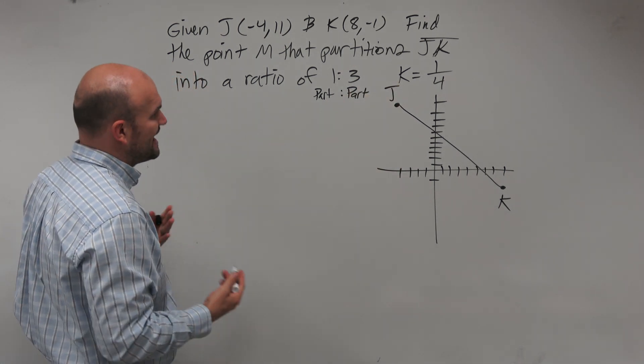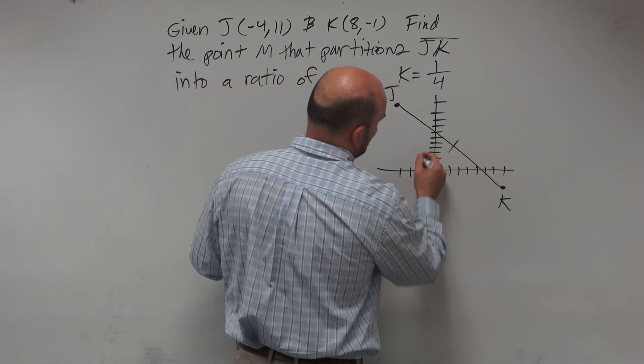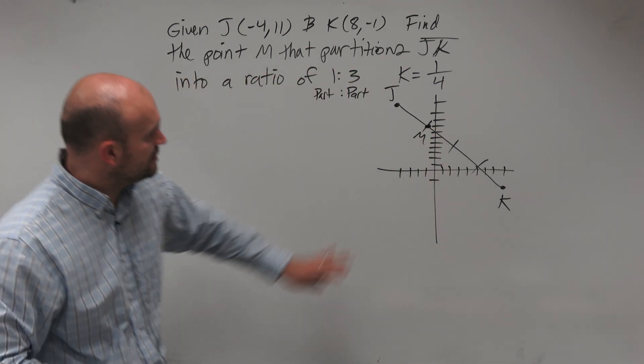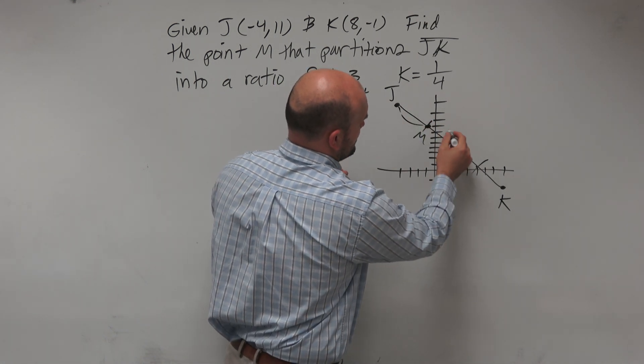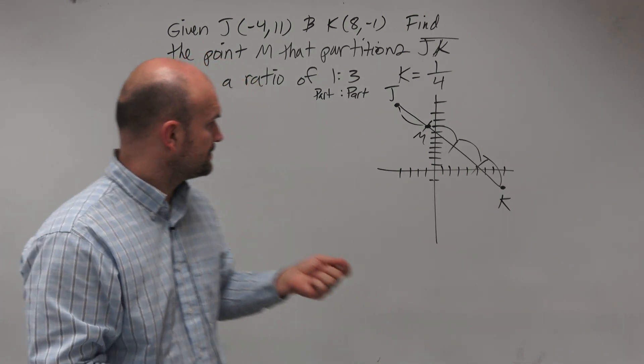Now for partitioning, if we want to find M, there's four parts. So let's just kind of estimate here, just for fun. Looks like M should be right around there. You're going to compare it to one part to three parts. You see it? One part, three parts, which means there's a total of four parts.